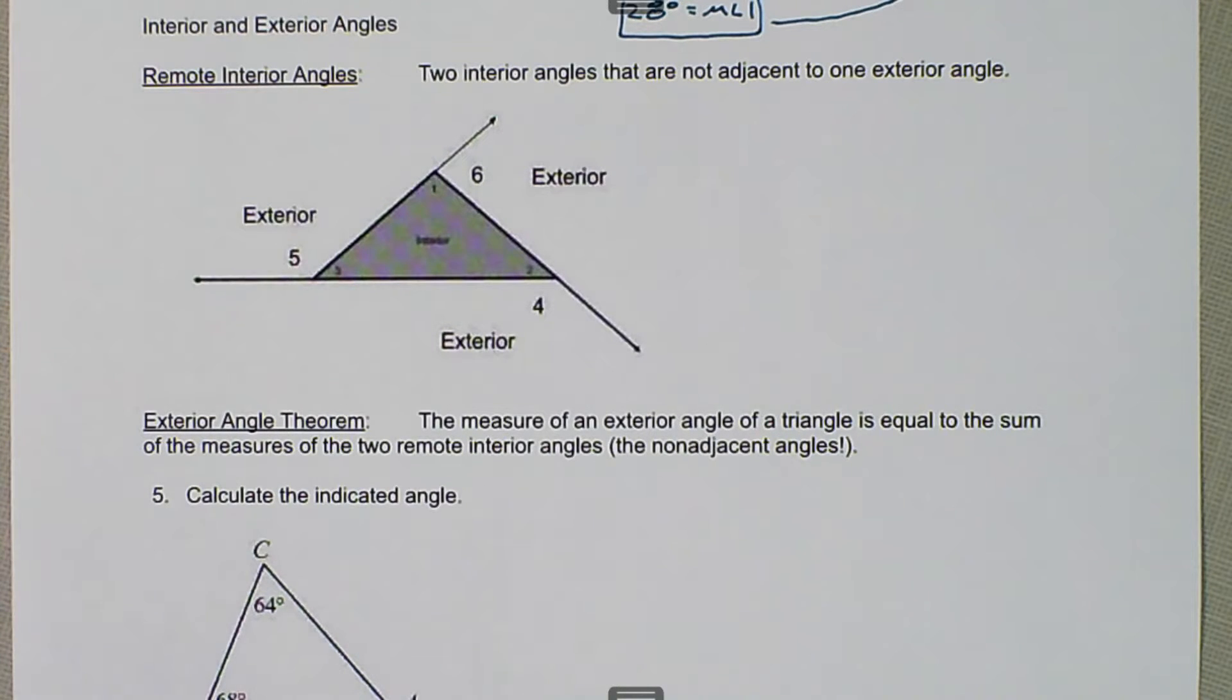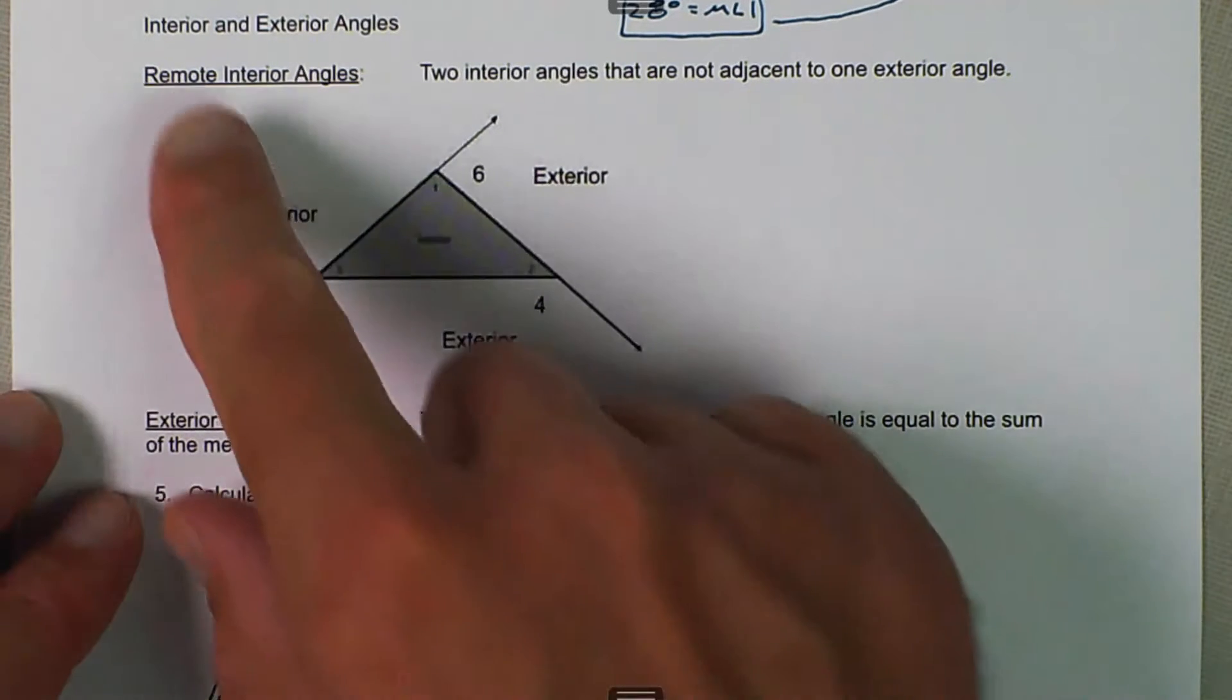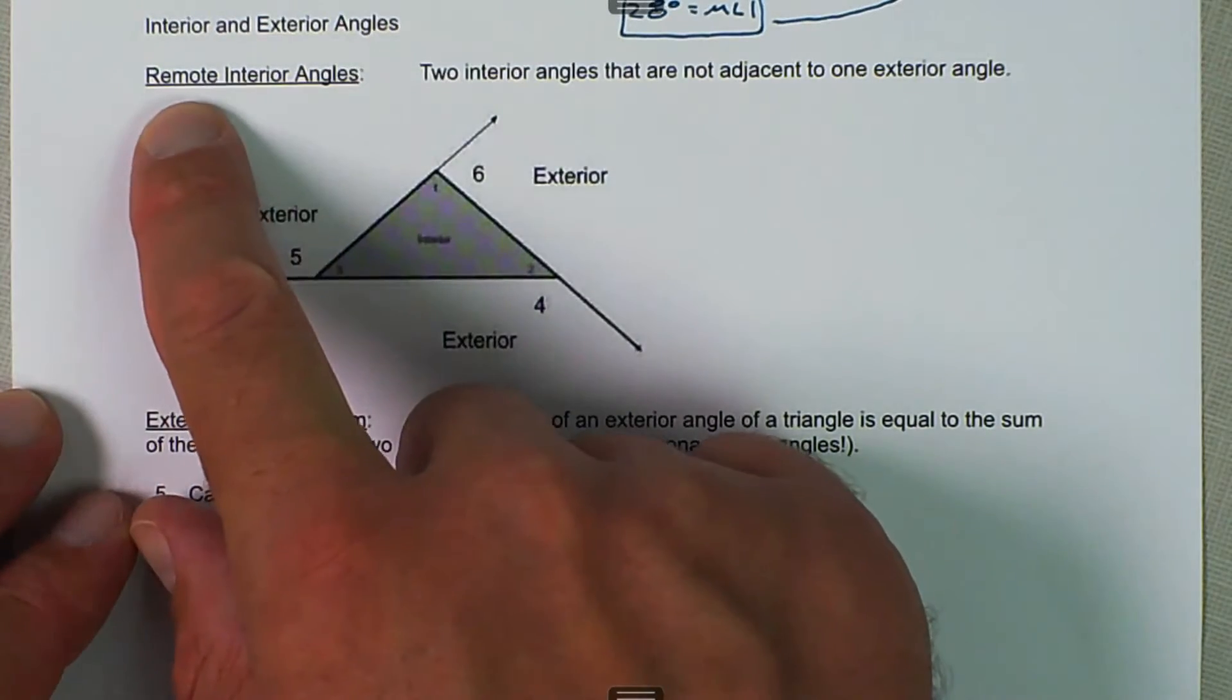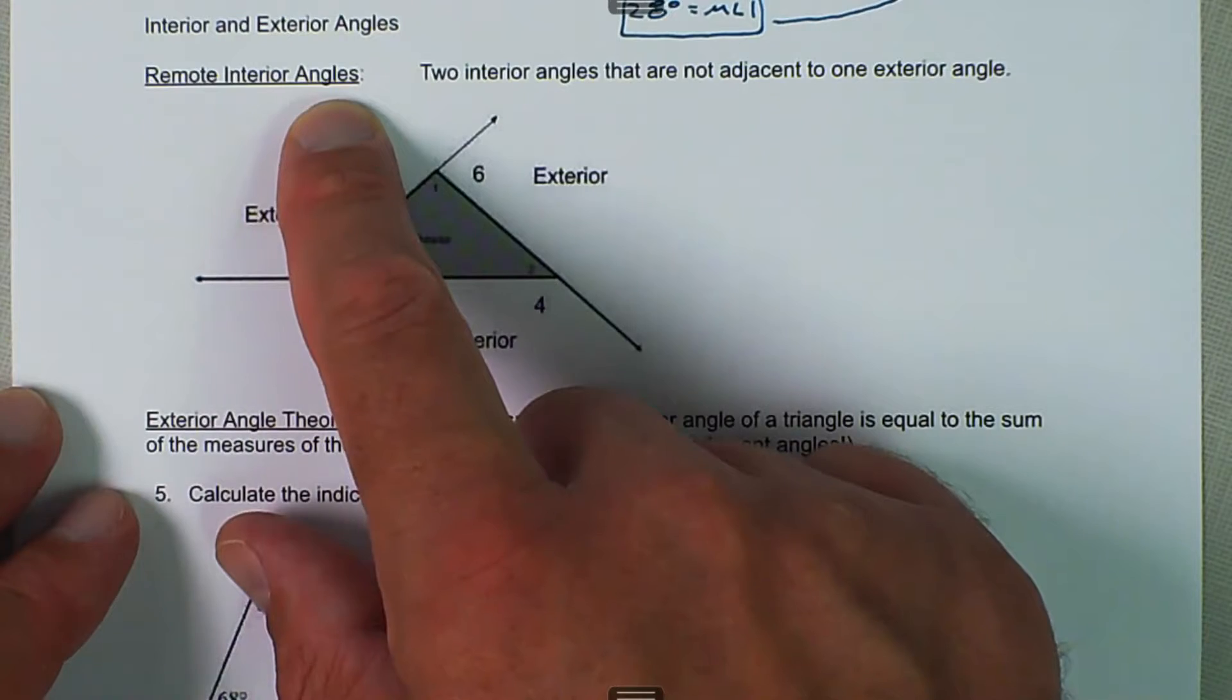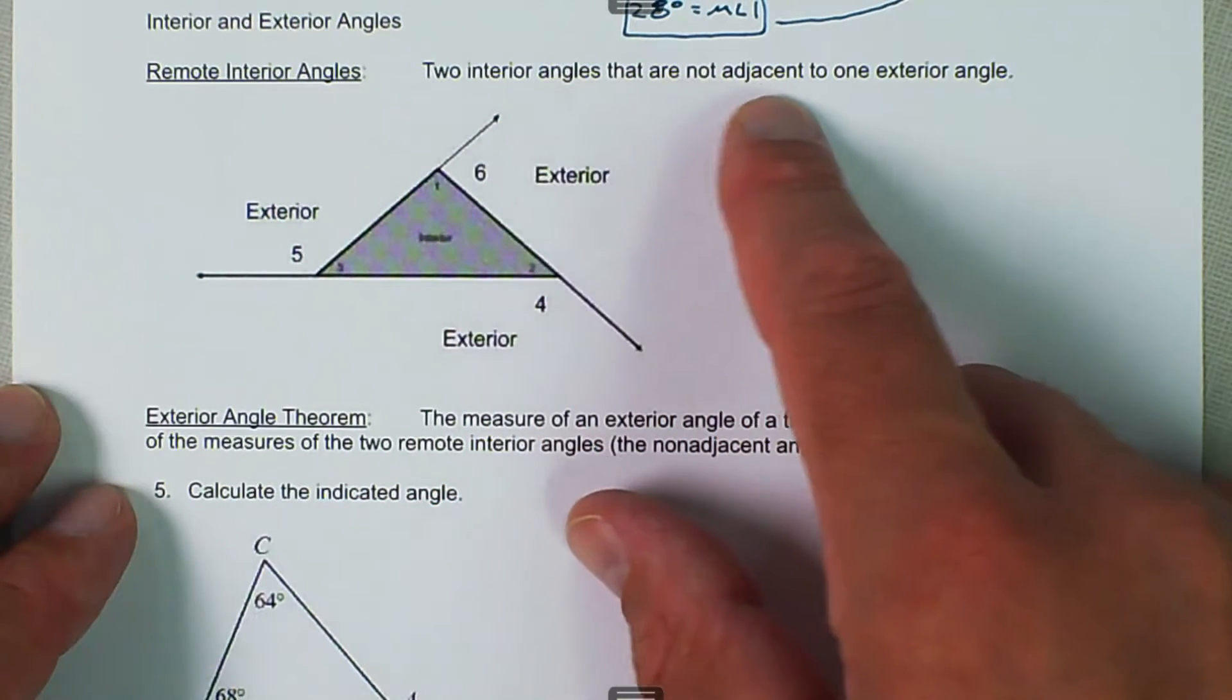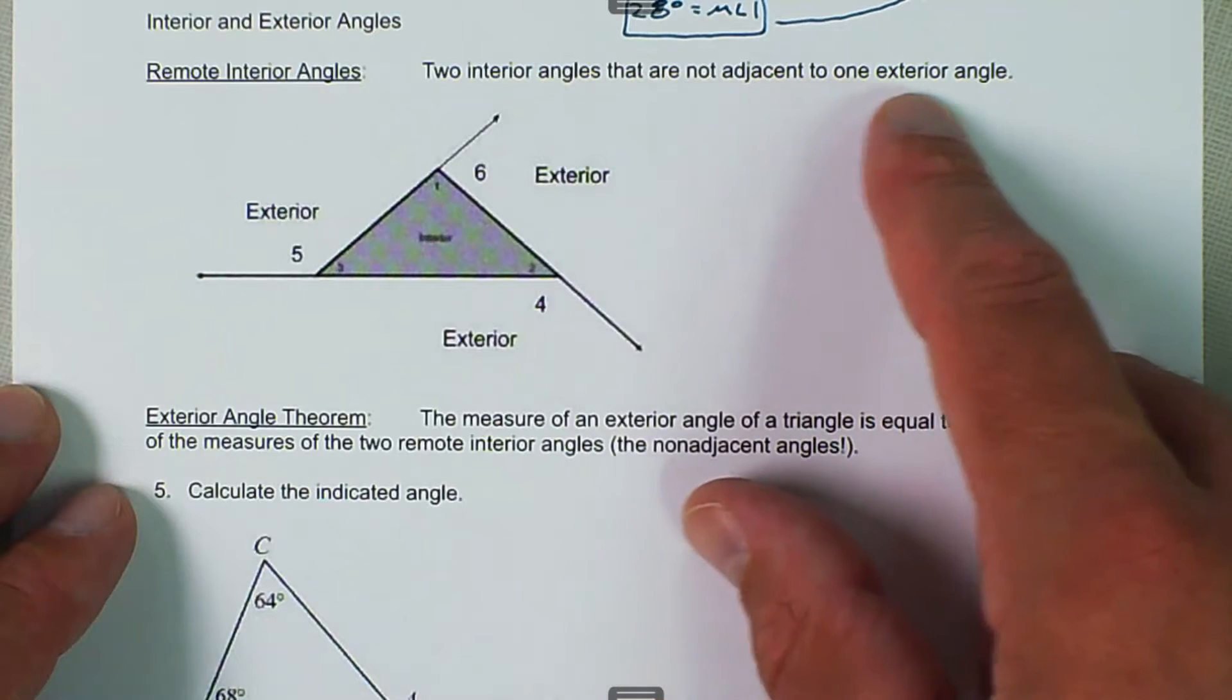We were talking about angles in triangles, and now we want to talk about interior and exterior angles. Remote interior angles are two interior angles that are not adjacent to one exterior angle.